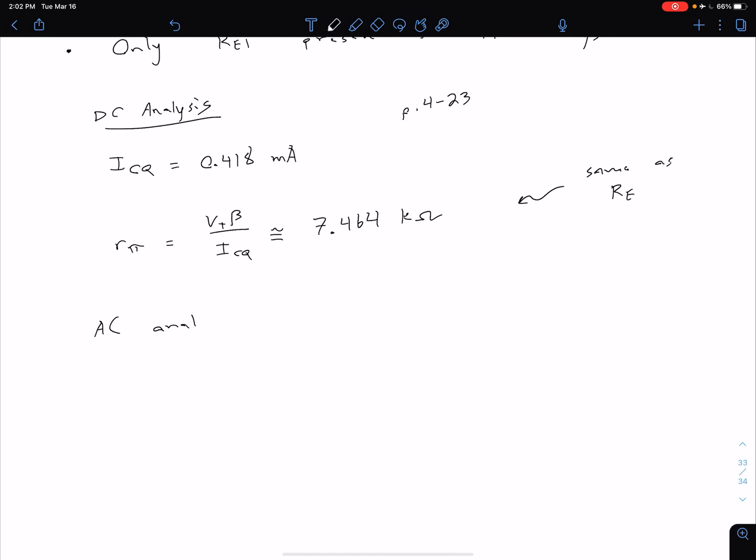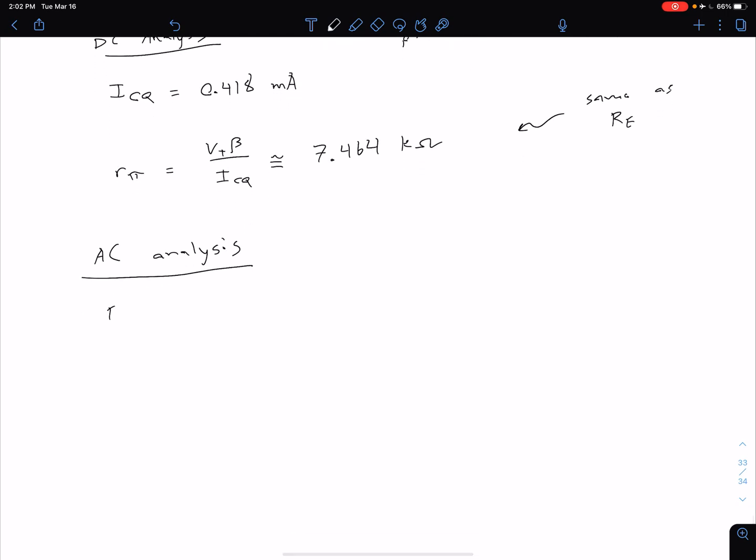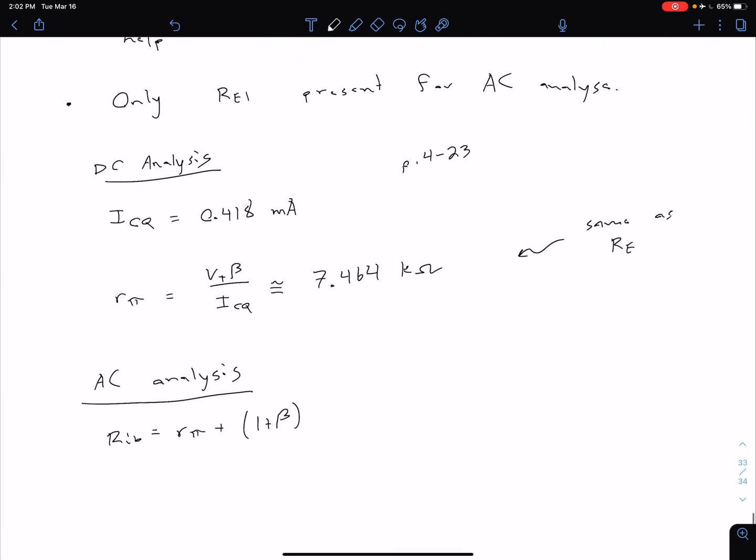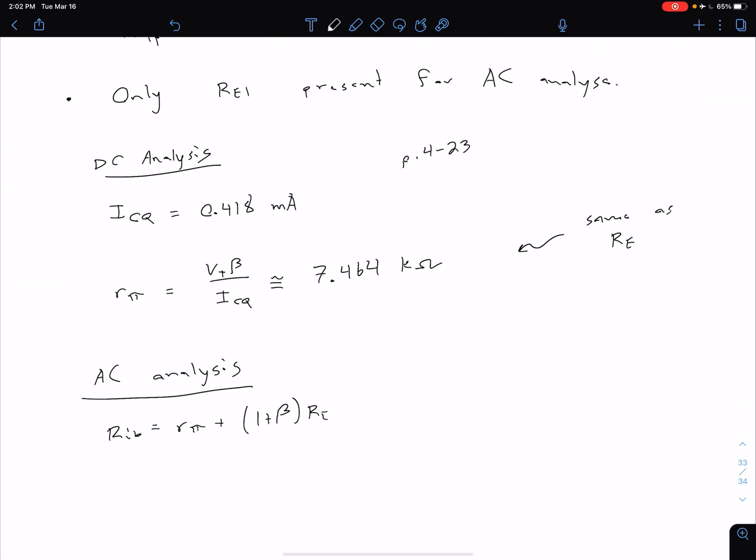Now we're going to switch over and we do our AC analysis. So this was for our DC analysis. Now things are going to look a little different when we go to do our AC analysis. We're going to have our R i b, which is equal to R pi plus 1 plus beta times the emitter resistor. But in this case, our RE2 is being bypassed, so the only one that's showing up in our AC analysis is this RE1. So this becomes RE1.